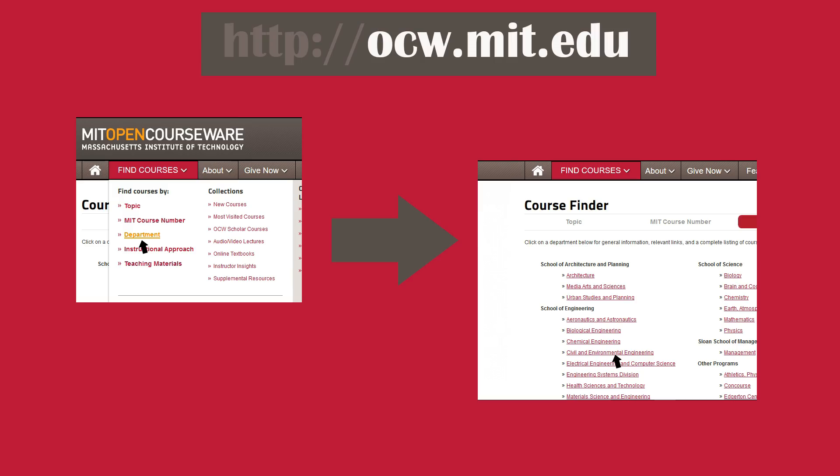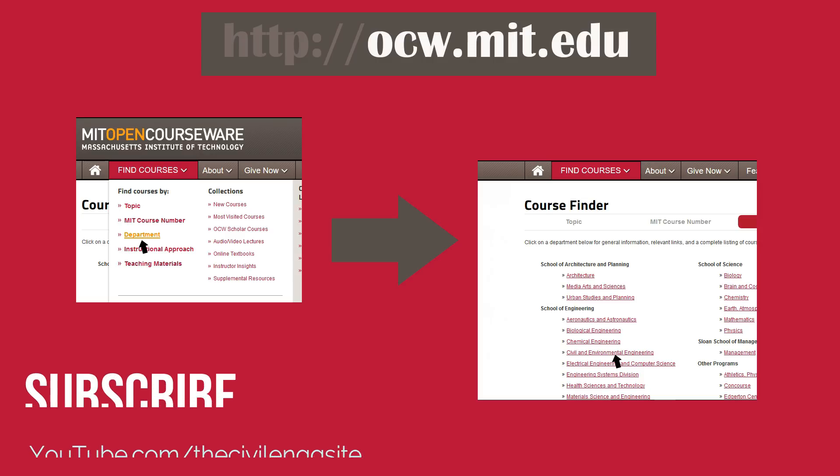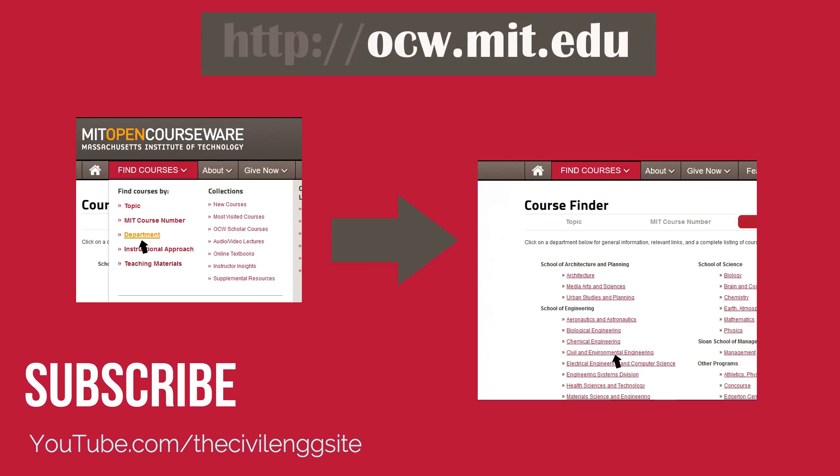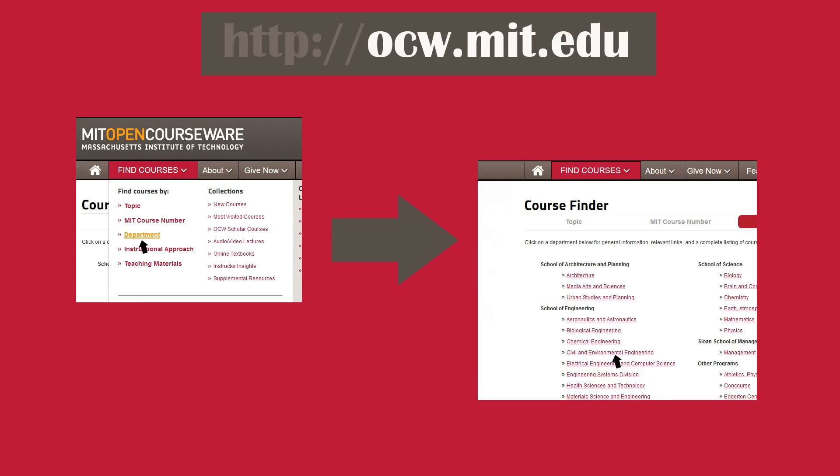Alternatively, you can simply type ocw.mit.edu in the address bar of your internet browser and visit their page. Then select 'Department' within 'Find Courses' in the menu. After the new page loads, you can click on 'Civil and Environmental Engineering' within the 'School of Engineering' section.